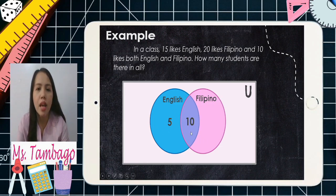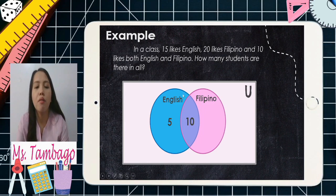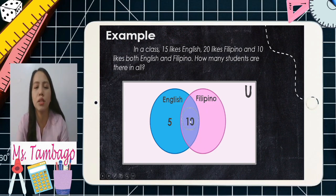How about for Filipino? Same process. We have 20 students who like Filipino. We already have 10 in the middle that is still included in the pink circle. Therefore, we subtract: 20 minus 10, which equals 10.